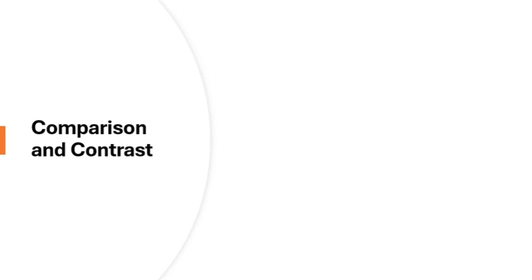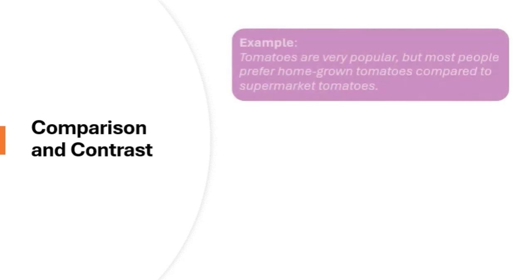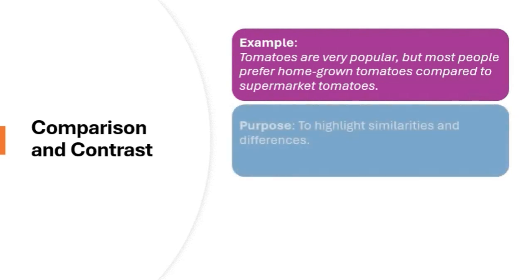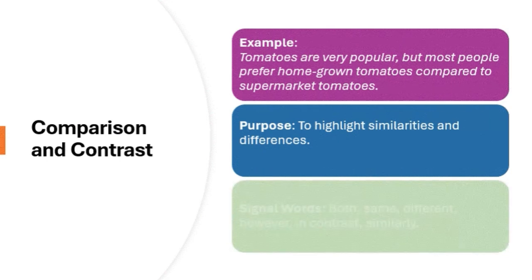Now on to comparison and contrast. This is exactly what it sounds like — you're either comparing two things, showing their similarities, or contrasting them, highlighting their differences. For example, if you're writing about tomatoes, you might compare homegrown tomatoes to store-bought ones. Homegrown tomatoes may be fresher and tastier because they're picked at peak ripeness, while store-bought tomatoes, picked early for transport, might not have the same flavor. This pattern works well when you want to explore the pros and cons of two ideas, products, or situations.